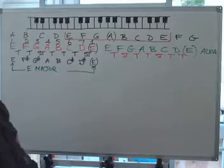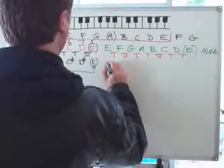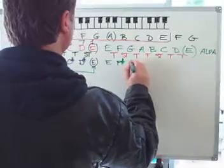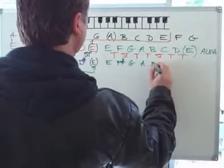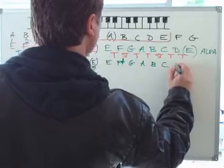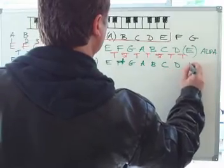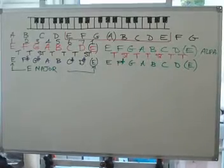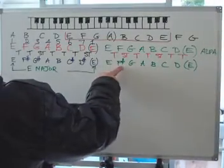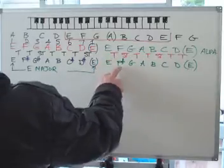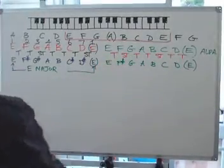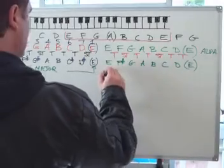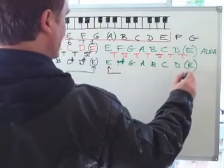But it will produce E, F sharp, G, A, B, C, D, and back to the E again. So the only difference there between that is this F sharp. So that there is the E natural minor scale.